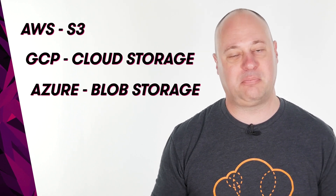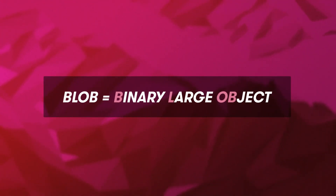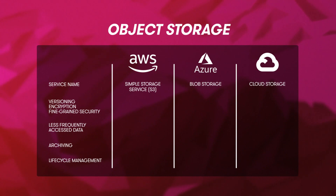Let's start with object storage. In the context of object storage services, an object is a file. AWS calls their object storage offering Simple Storage Service, or S3 for short. GCP calls theirs the aptly named Cloud Storage. Azure ups the geek quotient a bit by calling theirs Blob Storage — blob is just an acronym that means Binary Large Object, another word for file. Both AWS and GCP call the container for your data a bucket, while Azure calls it a container.